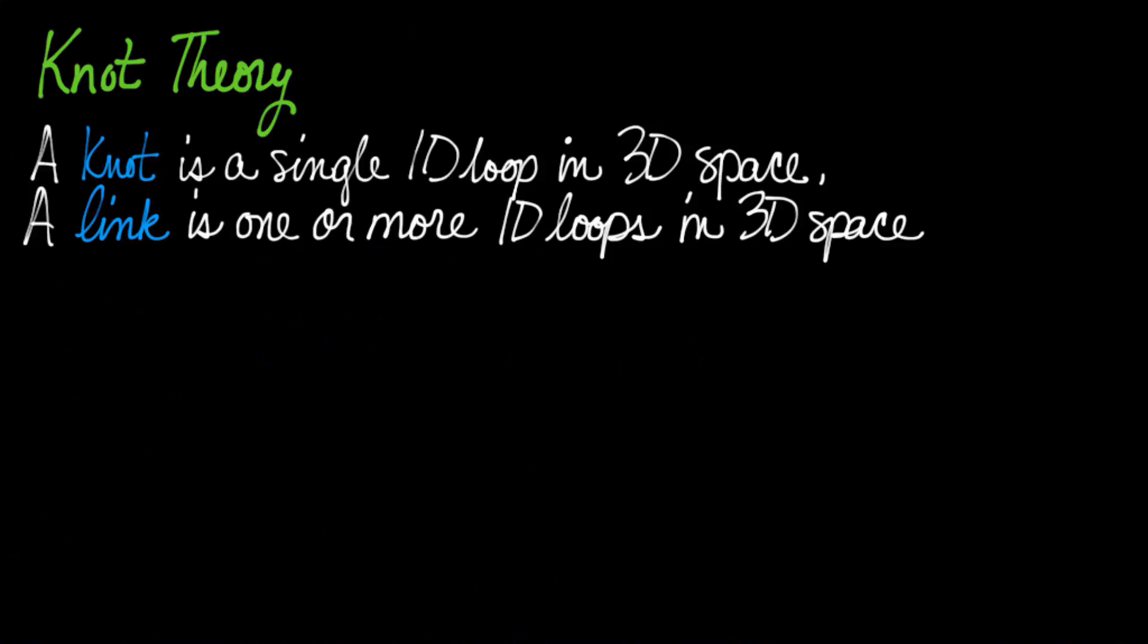A knot is a single 1D loop in 3D space. It has to be a loop. It cannot be an open piece of string. And a link is one or more 1D loops in 3D space.